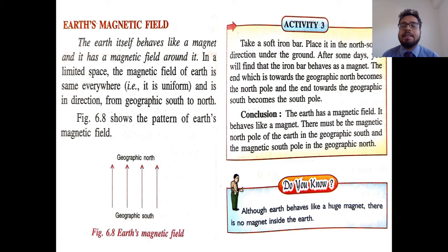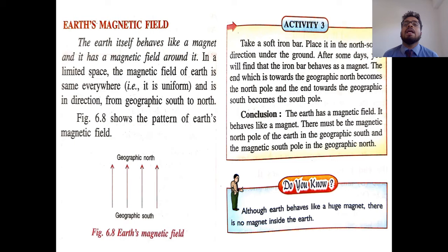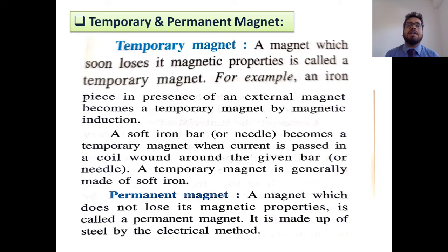There must be a magnetic north pole of the earth at the geographical south and a magnetic south pole at the geographical north. So the poles of the magnetized iron bar are opposite to the earth's poles — if the earth's magnetic north pole is at the south, then the earth's magnetic south pole will be at the geographical north. There is one interesting fact: though earth behaves as a magnet, there is no magnet inside the earth.